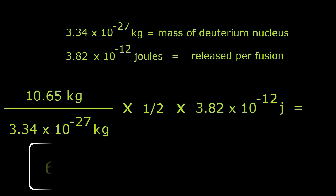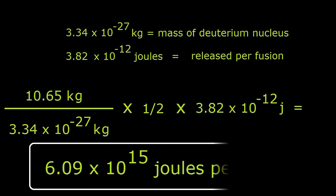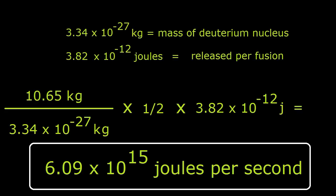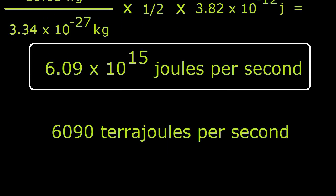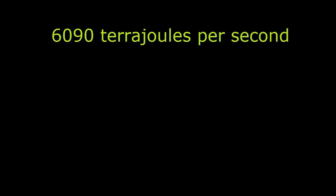And the total amount of energy per second released is then 6.09 times 10 to the 15th joules per second, or in new speak, 6,090 terajoules per second.